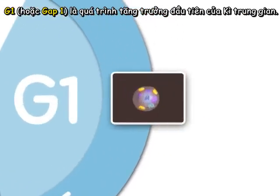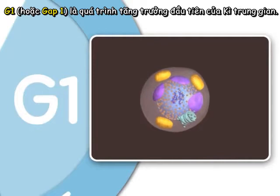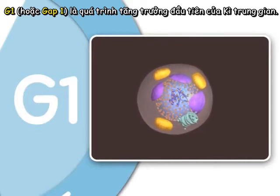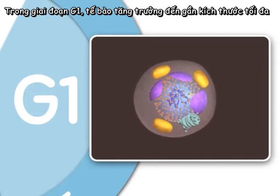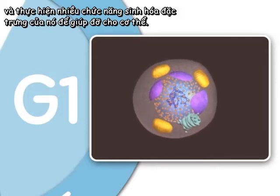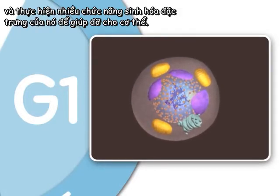G1, or Gap 1, is the first growth stage of interphase. In G1, the cell grows to nearly its full size and performs many of its specific biochemical functions that aid the organism.